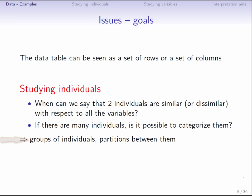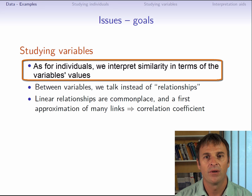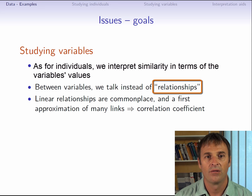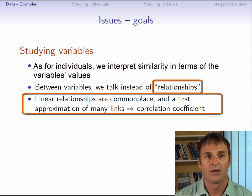Following the approach taken to study individuals, might it also be possible to interpret the data in terms of the variables. For instance, which variables provide similar information to each other? Between variables, rather than similarity, we in fact talk about relationships. And the most well-known studied relationships between variables are linear. Indeed, PCA focuses on linear relationships between variables. More complex connections also exist, such as quadratic, logarithmic, and exponential ones, but these are not studied in PCA. This may seem restrictive, but in practice, many relationships can be considered linear, at least as a first approximation.